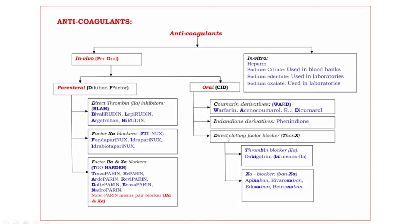Let us discuss coumarine derivatives. The drugs use the mnemonic WARD — bold letters are W, A, D. W — warfarin; A — acenocoumarol; D — dicoumarol.